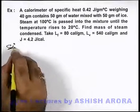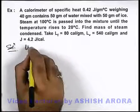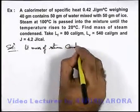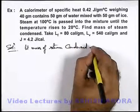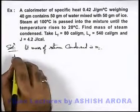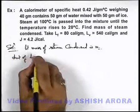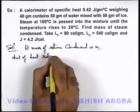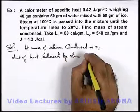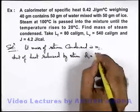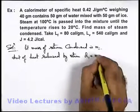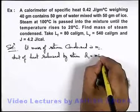Now in this situation, let the mass of steam condensed be m. We can find the amount of heat released by steam — call it Q1. If mass m is condensed, then this m will release its latent heat as m·Lv.